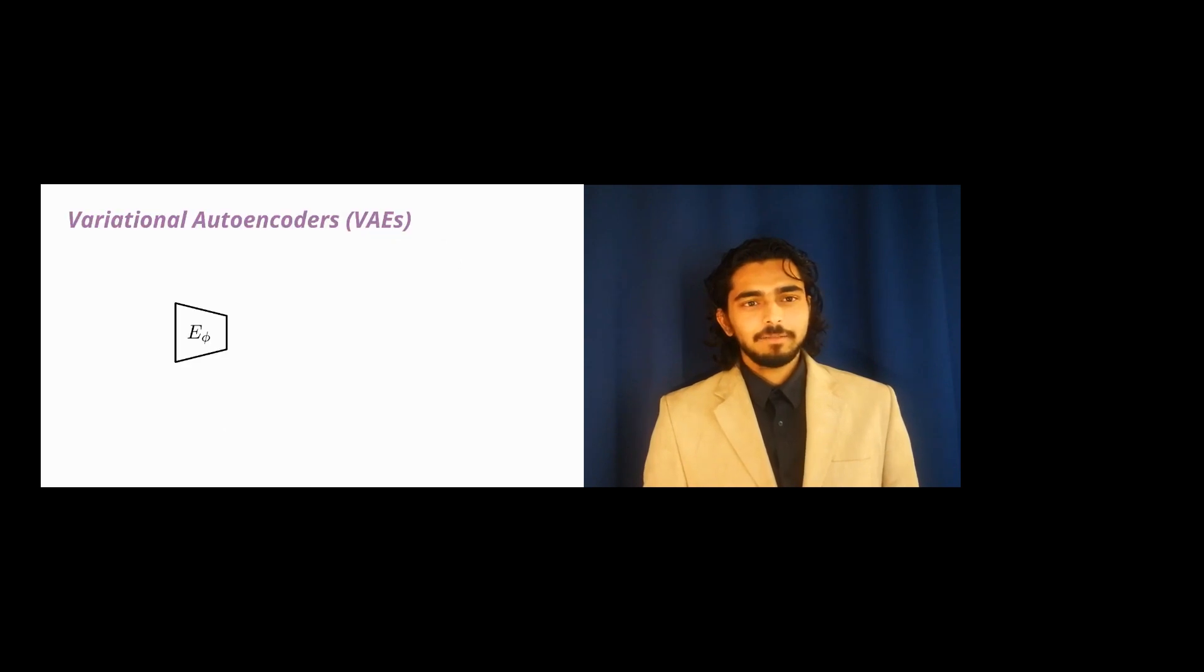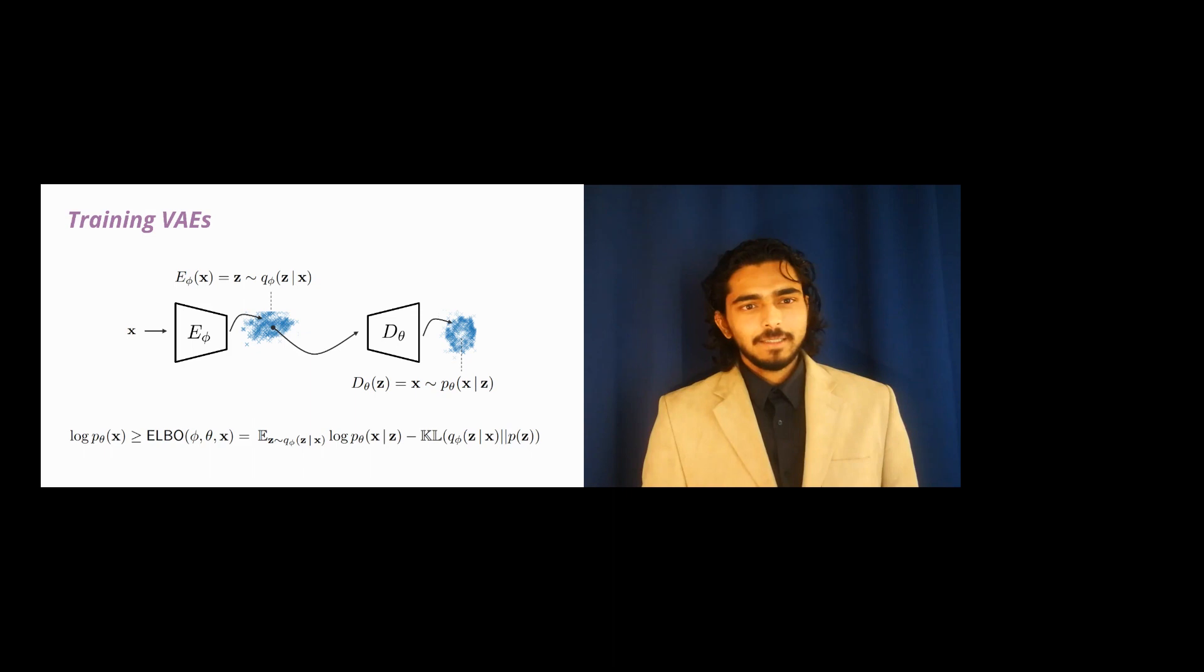Let's start by revisiting VAEs. A VAE consists of two stochastic parts, an encoder E and a decoder D. E maps data points X into a probability distribution Q, also called the posterior. The decoder D turns a latent code Z into a probability distribution P.